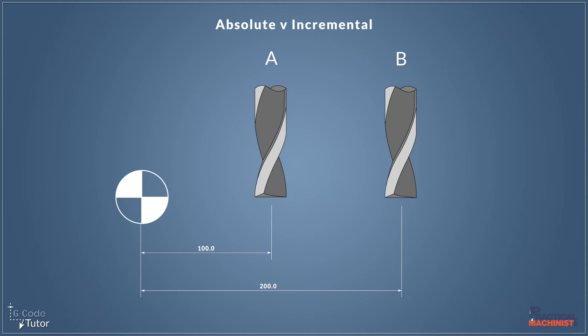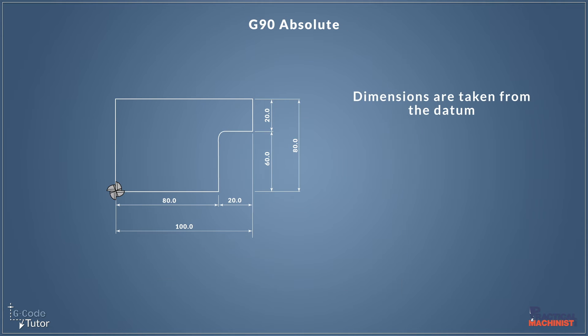Whereas in absolute positioning all dimensions run from the datum and the datum doesn't move — it stays as a fixed point. So with absolute, to put the machine into absolute mode we use the G-code G90. And with absolute all dimensions are taken from the datum and the datum doesn't float.